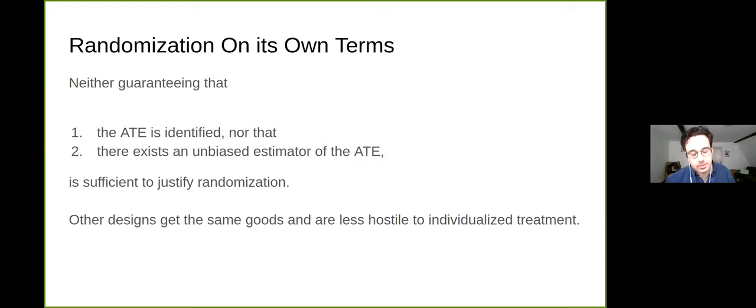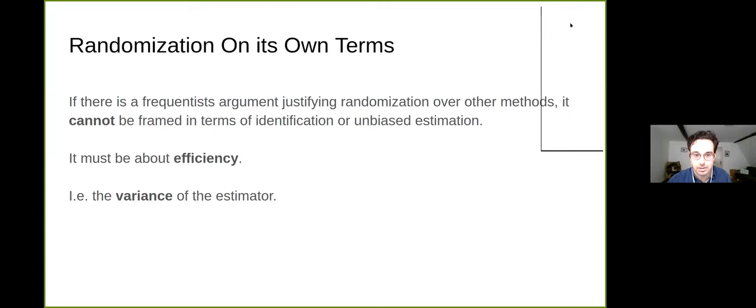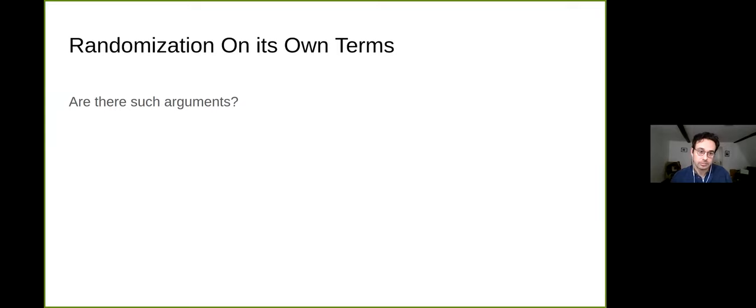But what am I trying to say here? Neither guaranteeing that the ATE is identified, nor that there is an unbiased estimator of the ATE is sufficient to justify randomization. Why? Because other designs get you the same goods, and also they're less hostile to individualized treatment. So if there is an argument for randomization over other methods, it can't be framed in terms of identifiability or unbiasedness. It has to be about efficiency or the variance of the estimate.